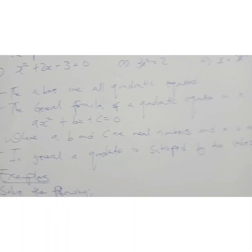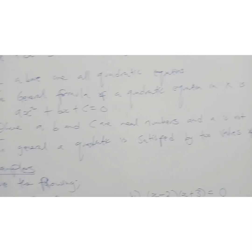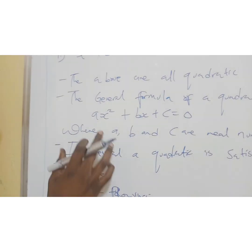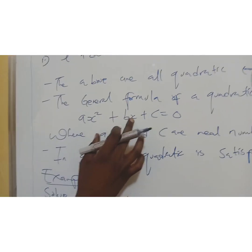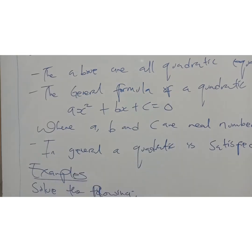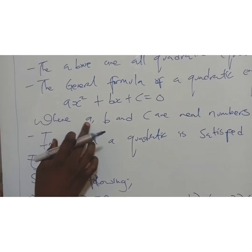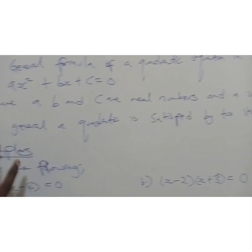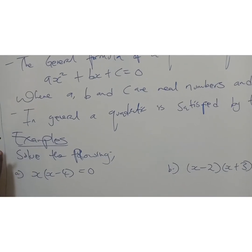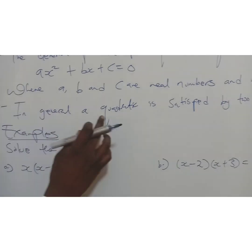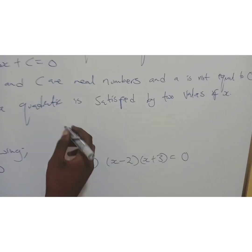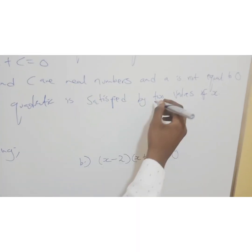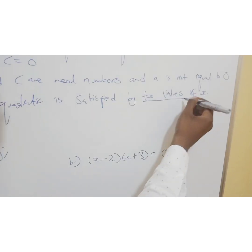The general formula of the quadratic equation in x is this. I'm sure you have seen this before. Ax squared plus bx plus c equals 0, where a, b, and c are real numbers and a is not equal to 0. In general, a quadratic is satisfied by two values.